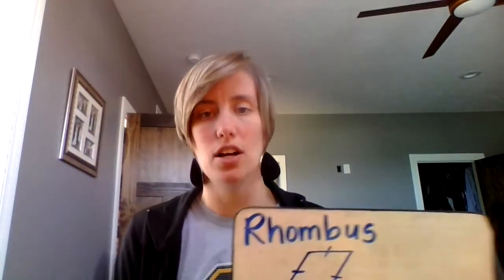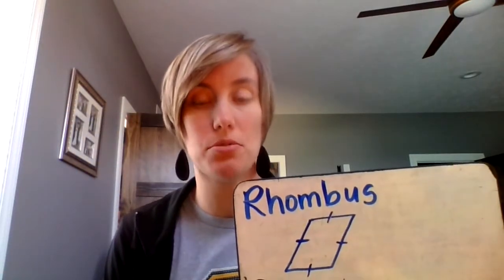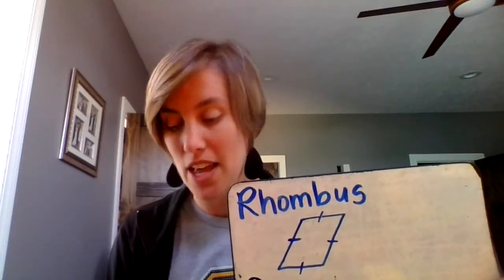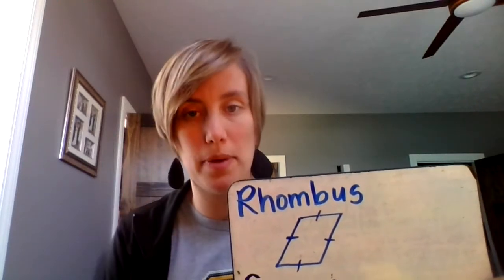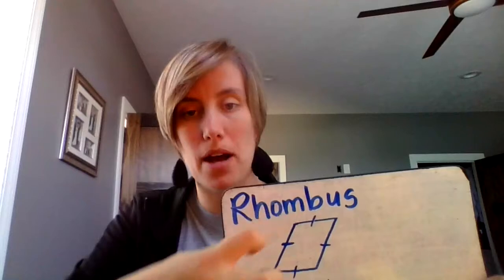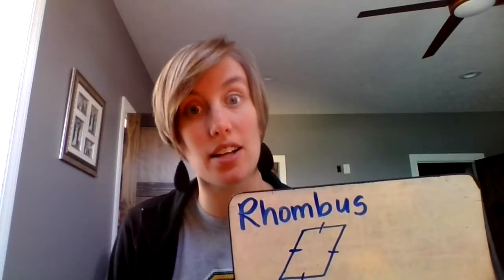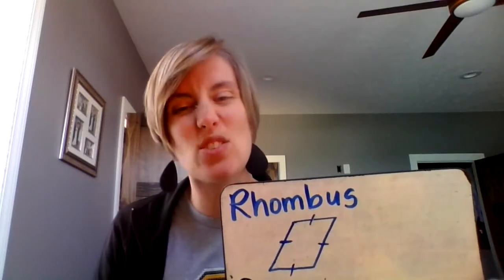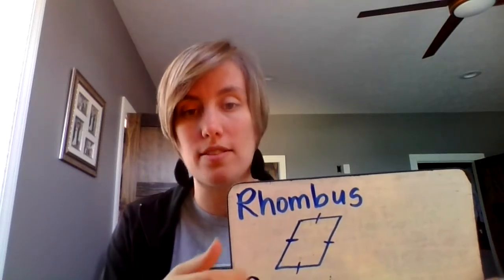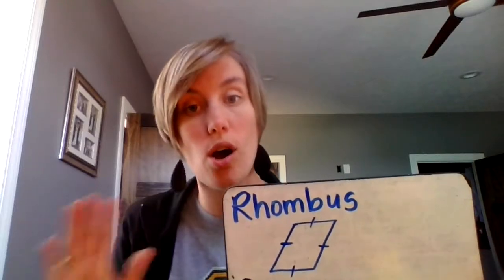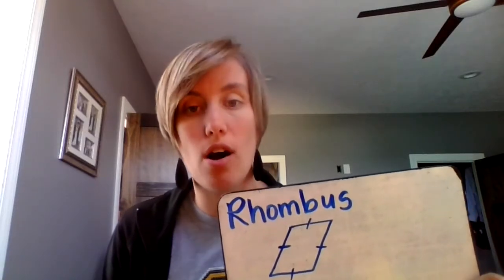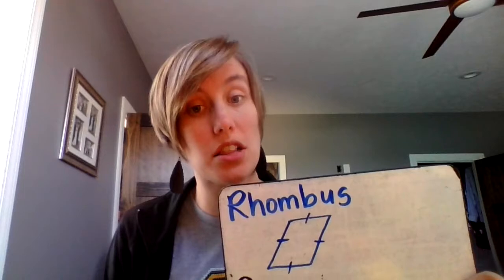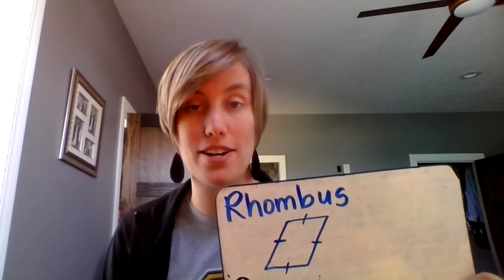Next, we have a rhombus. A rhombus looks similar to a parallelogram in that it's kind of slanted. It has two pairs of parallel lines — top and bottom, side to side — that will never touch. And it has four sides of equal length, meaning all four sides are the same. Even though my drawing might not look exactly equal, the tick marks tell you that it is.